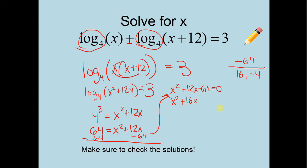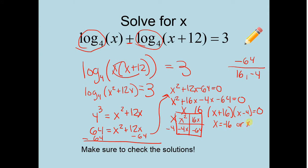4x minus 64 equals 0. Let's box this guy. We got x going this way, an x going that way, 16 going that way, and a negative 4 going that way. So you have x plus 16, x minus 4 equals 0. So x has to equal negative 16 or x can equal 4. Now notice, I need to check solutions.